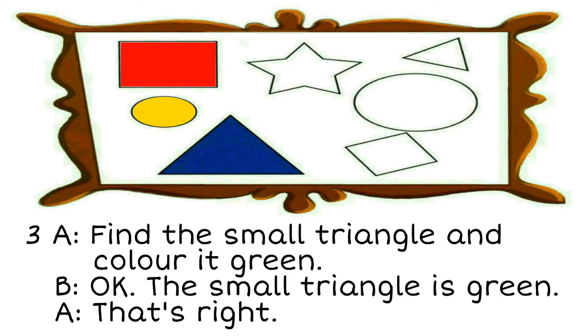3. Find the small triangle and colour it green. OK. The small triangle is green. That's right.